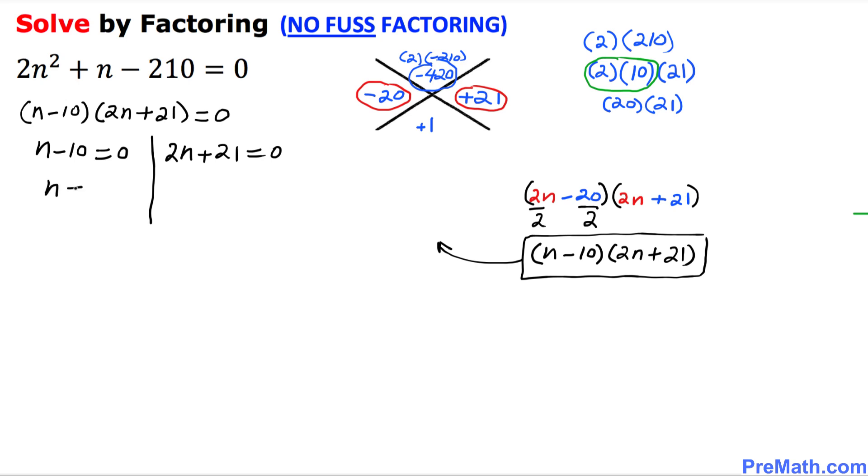That means n turns out to be 10 as one of our solutions. And on this side, move this 21 on the other side, 2n turns out to be negative 21 divided by 2 as another solution.